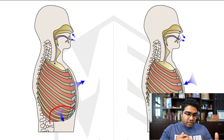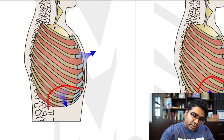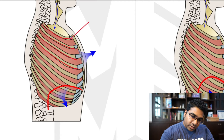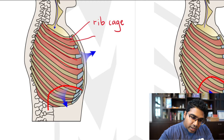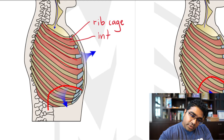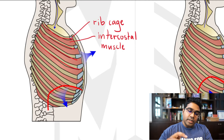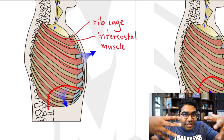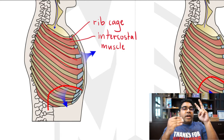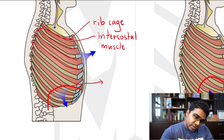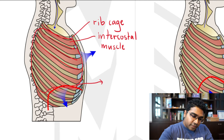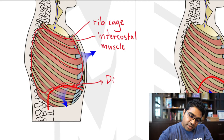In humans, there are three main things involved. First, all these structures together make up the ribcage. Then there is the muscle controlling the ribcage — attached to it — which is the intercostal muscle. There are two sets: the internal intercostal muscle, which is the inner layer, and the external intercostal muscle, which is on the outer layer. We also have another piece of muscle at the floor of the thoracic cavity — the chest cavity — known as the diaphragm.